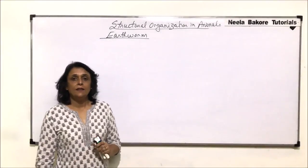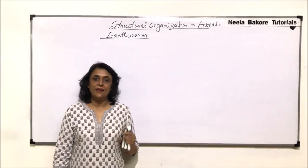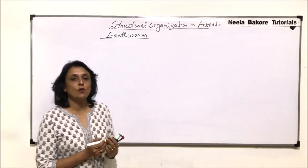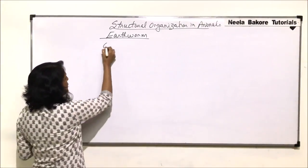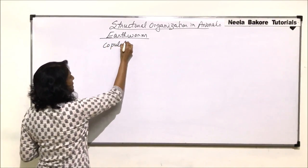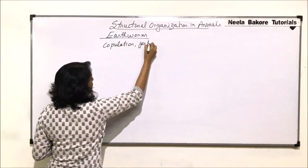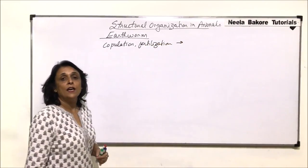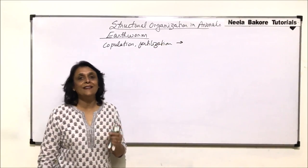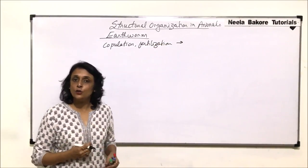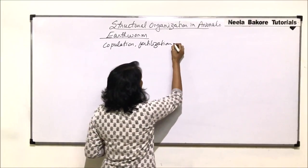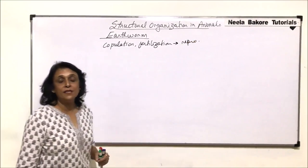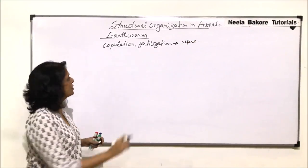We have seen the structures of male reproductive as well as the female reproductive systems. Now we'll be talking about the process of copulation, then fertilization, and lastly cocoon formation, so that the young earthworms hatch from that cocoon. That would complete the reproduction part — the young ones would be produced.